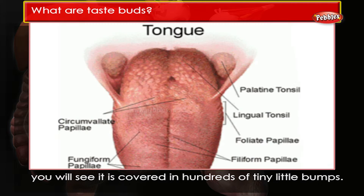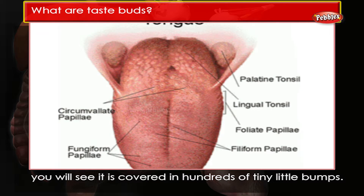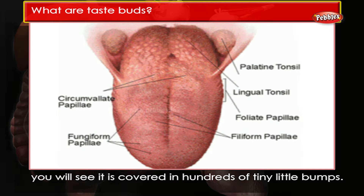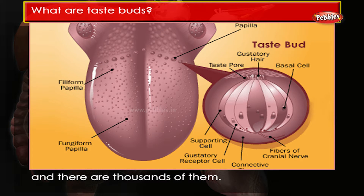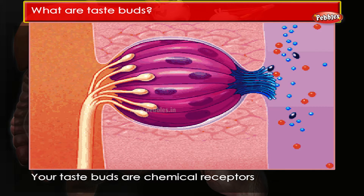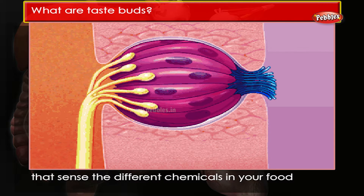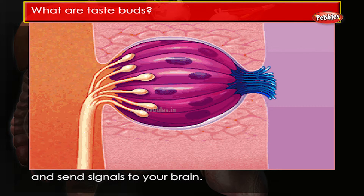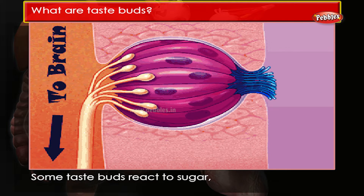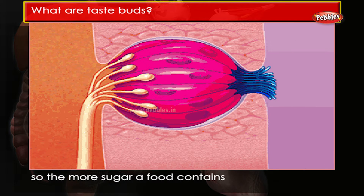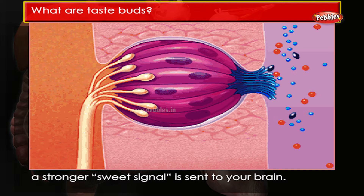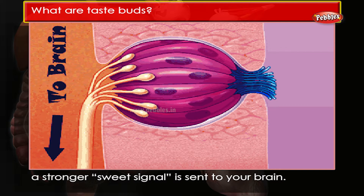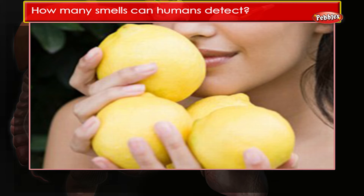What are taste buds? If you look closely at your tongue, you will see it is covered in hundreds of tiny little bumps. These bumps contain your taste buds, and there are thousands of them. Your taste buds are chemical receptors that sense the different chemicals in your food and send signals to your brain. Some taste buds react to sugar, so the more sugar a food contains, the stronger a sweet signal is sent to your brain.